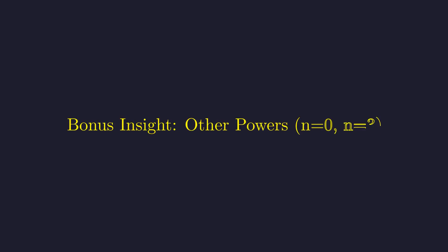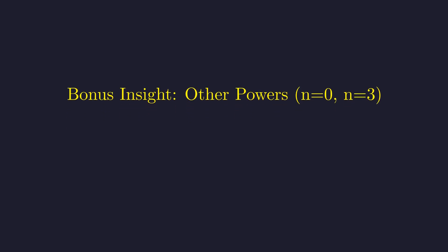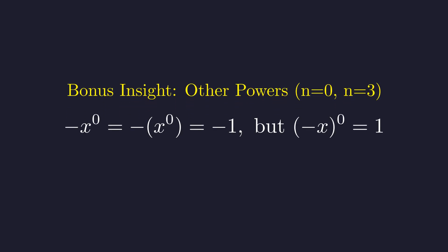Before we finish, you might wonder, does this same principle apply to other exponents? With zero as the exponent, the difference is even more stark. Negative x to the zero power gives negative 1, but the quantity negative x to the zero power gives positive 1.